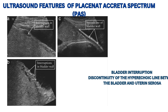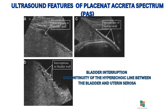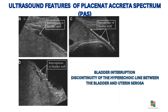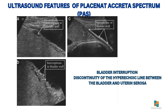Regarding the bladder sign, here we can observe interruption of the bladder wall. We can see an irregularity in the normal hyperechoic line. In these images, we can clearly see the loss of the normal smooth white hyperechoic line of the bladder wall interface.